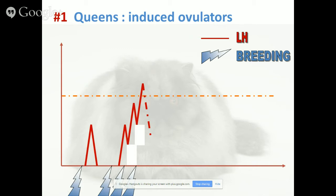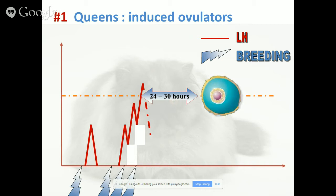It's important to keep in mind that only 50% of queens will ovulate after a single breeding. So you need to observe at least three breeding attempts to be quite sure that ovulation is about to occur. Typically, after those three breeding attempts, ovulation will occur 24 to 30 hours later and the oocyte will be released. In cats, the spermatozoa that are around can directly fertilize those oocytes. One breeding will only induce ovulation in 50% of females.